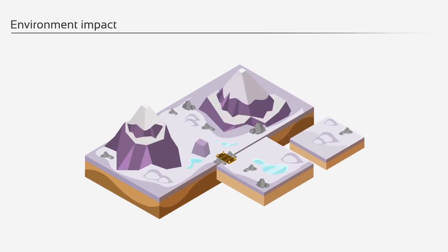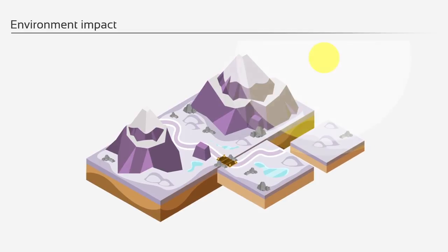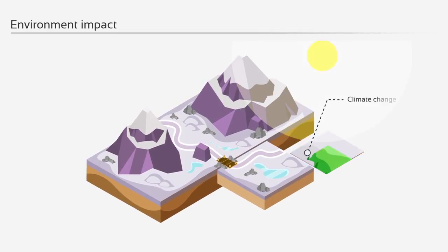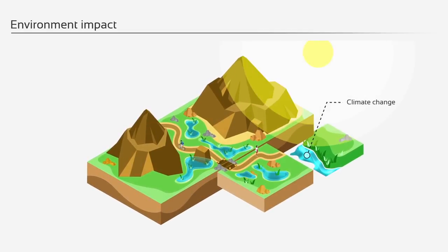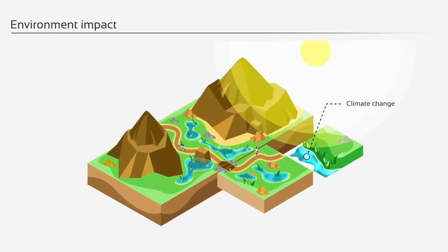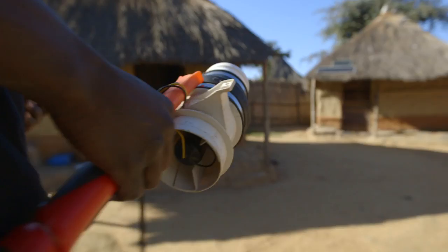And thirdly, climate change can play a role. So when temperatures rise, malaria can move to higher elevations or can move back into areas where it was previously eradicated.